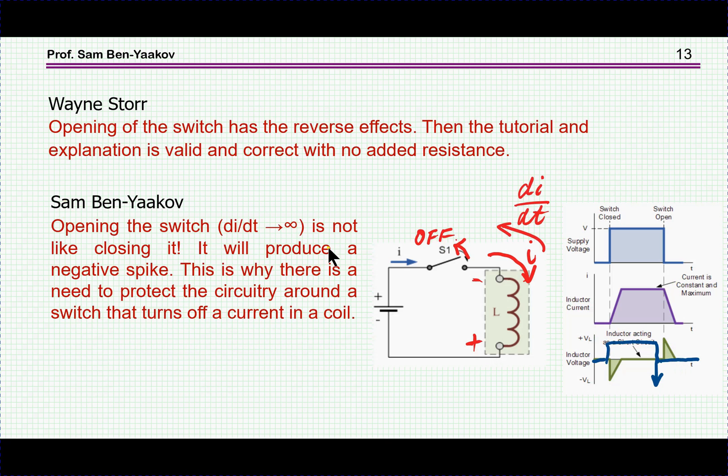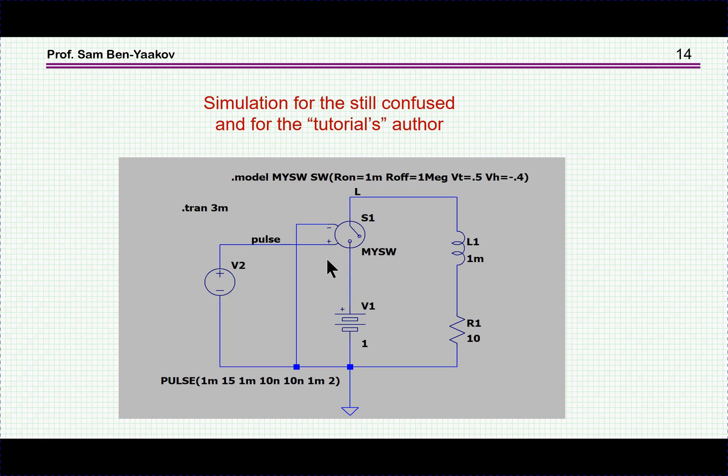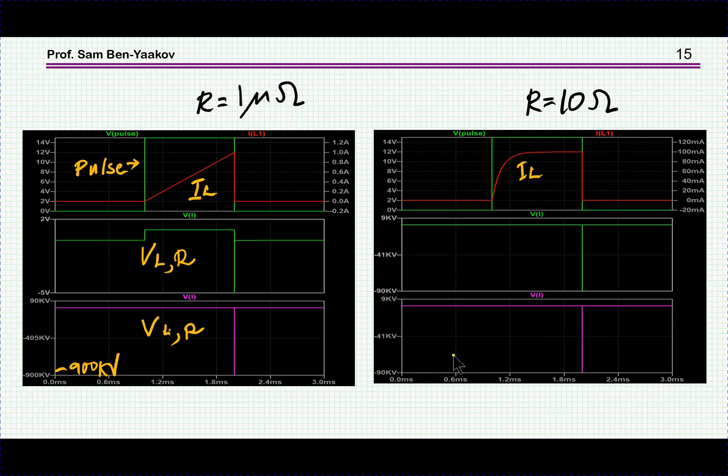So I have here a voltage source, one volt. I have a switch. Here is the excitation of the control of the switch, which is a square wave pulse, the inductor and a resistor. I'm running now the simulation with two cases: with effectively no resistance, I've changed this to one micro-ohm which represents a case without resistance, and then I've changed it to 10 ohms just to see what happens in the actual case.